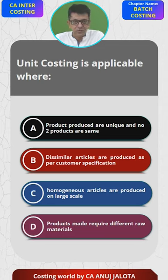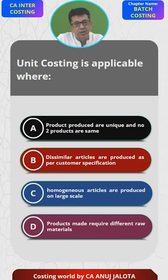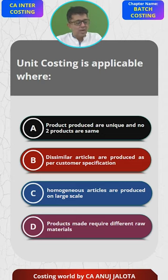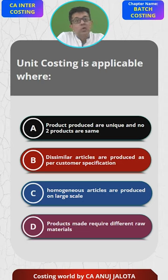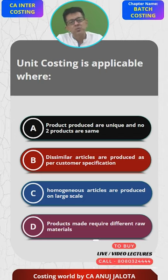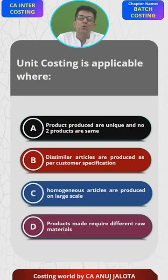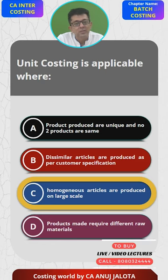The answer is C. A and B cannot be the answer because they are basically relating to job costing, whereby every unit produced is different. Unit costing basically works by finding out the cost of my entire company and dividing by the number of units that I make. Obviously, this can only be done if I manufacture only one type of product, because then cost per unit will be the same for all goods. That is exactly the principle of unit costing. So, unit costing is applicable where homogeneous articles are produced on a large scale. Answer is C, that's the correct answer.